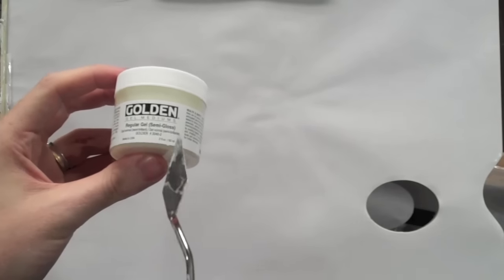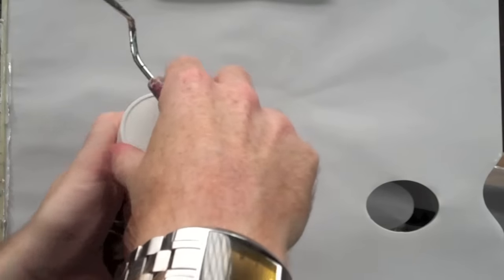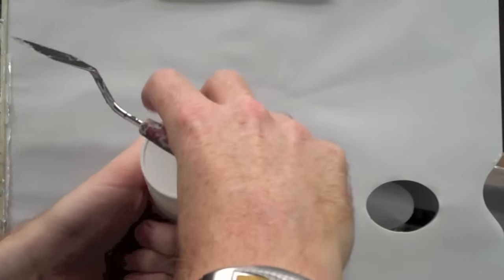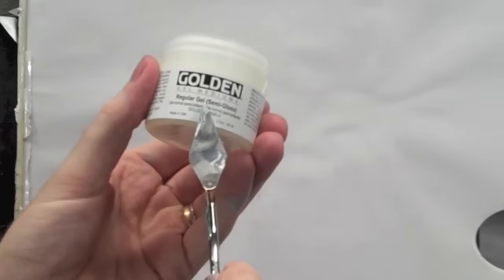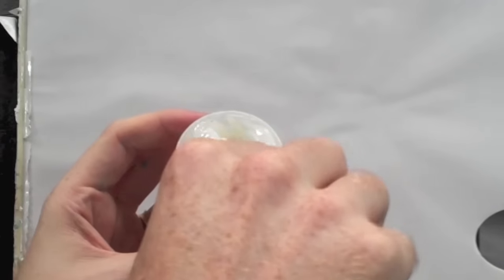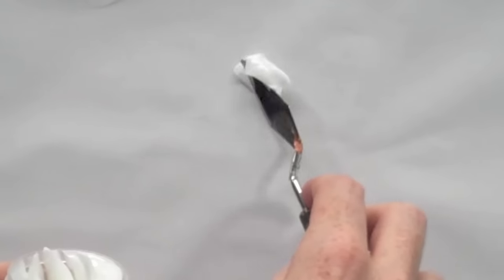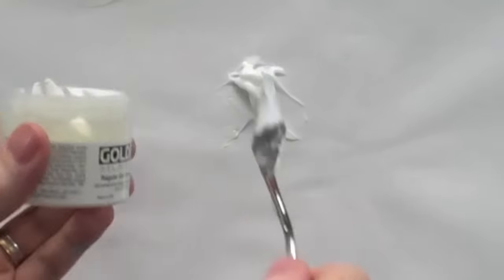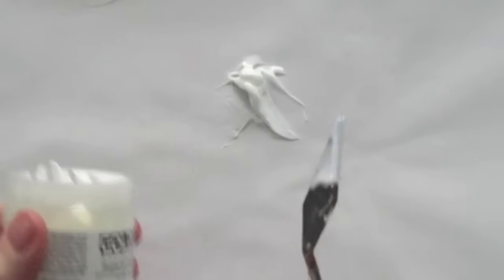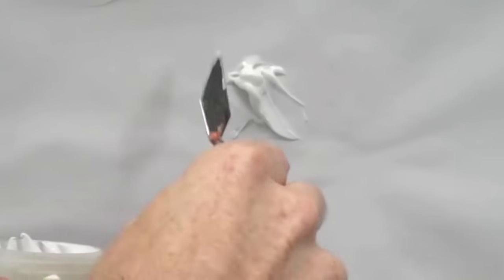Essentially all a gel is, is acrylic paint as an acrylic polymer but without the pigment added. So this is a regular gel, the consistency of this when we have a look at it is quite similar or pretty much similar, apart from having the pigment, as normal acrylic paint.